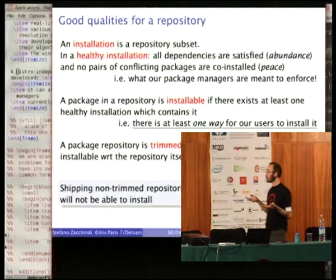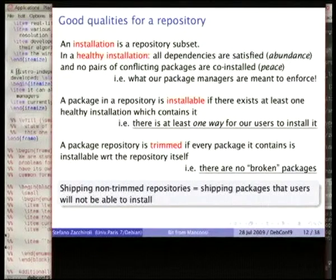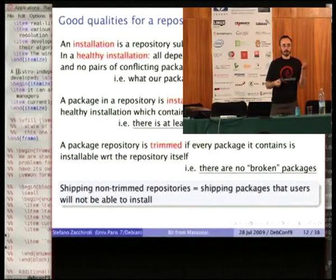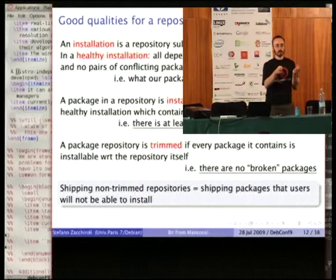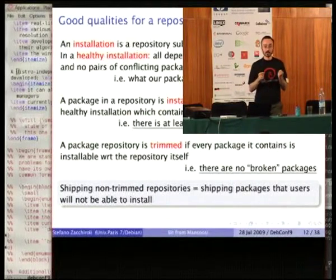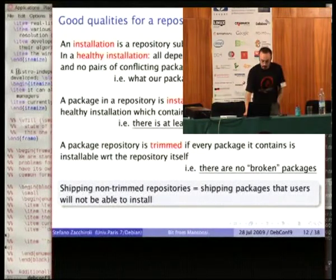We look at repositories and define the property of being 'trimmed.' Being trimmed for repositories means that every single package in the archive is installable. That does not necessarily mean it is installable on your machine, because you can want to have a package installed which is in conflict with that one and will never be able to install the other. But still, there should be at least one way to install that package. Otherwise your package is completely useless, and it is pointless to distribute it in the distribution.